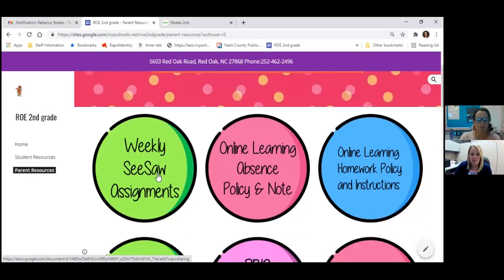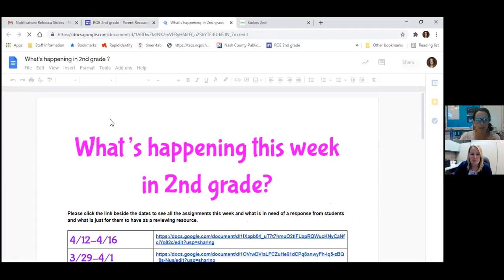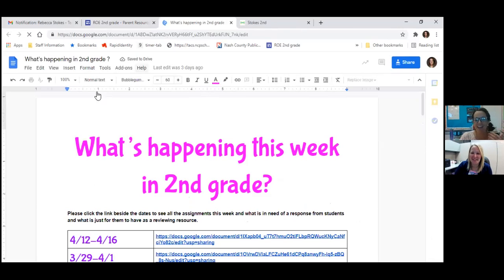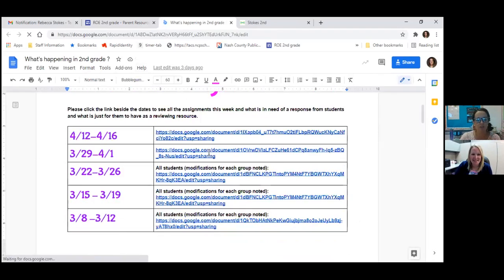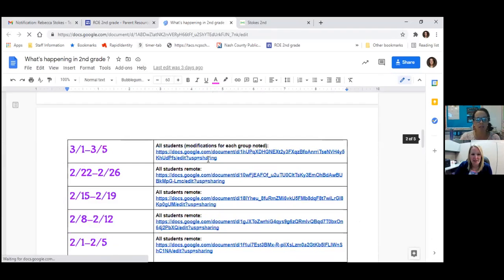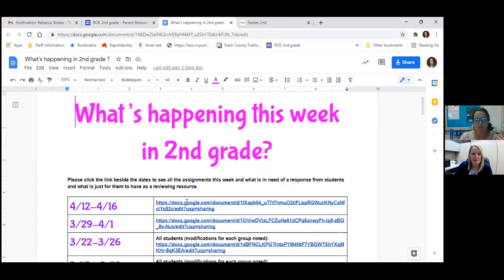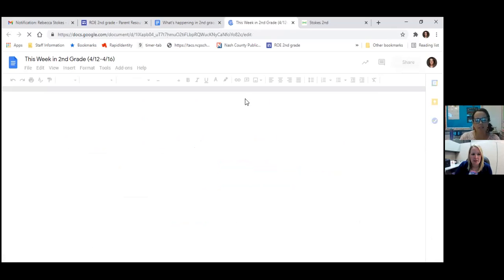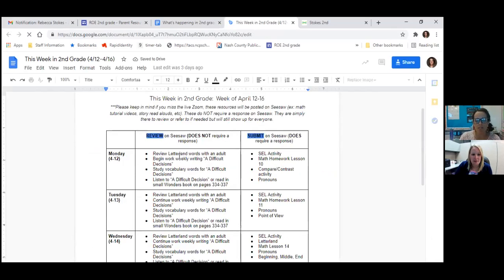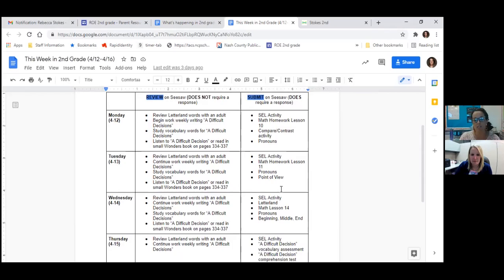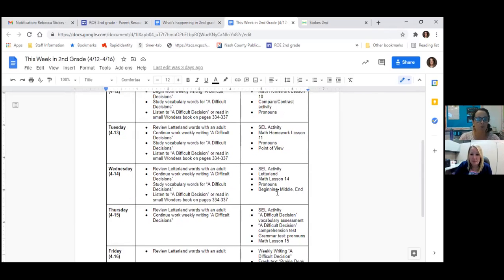But the biggest thing that's been really beneficial is we do this weekly Seesaw assignment. So every week we post a link to a schedule of what's happening in second grade. The student and parent just have to click here and then they will see a daily breakdown of what is going to be on Seesaw that does not require a response. Like here they need to review their Letterland words. But then they see in this column that they do have to turn in a math activity, a compare and contrast and pronoun. So it goes every day and it shows them exactly what's going to be posted, what page numbers their stories are on, and anything that we are expecting a response in Seesaw. So that has been really helpful.